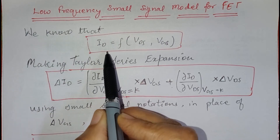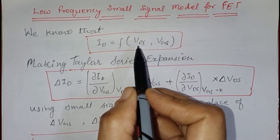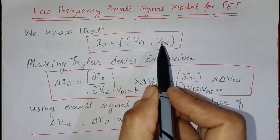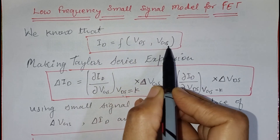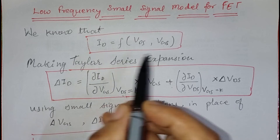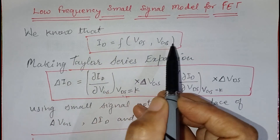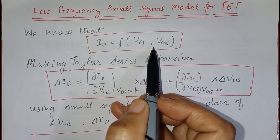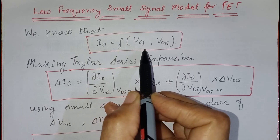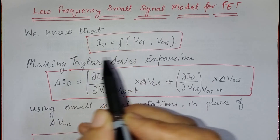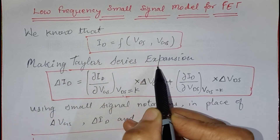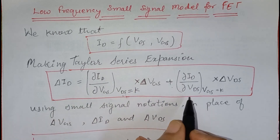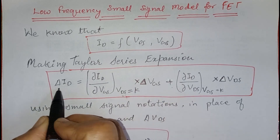We know that drain current depends upon two parameters: the voltage between drain and source (VDS) and the voltage between gate and source (VGS). To find the value of this ID or the value of this whole function at each and every point, we will make its Taylor series expansion.